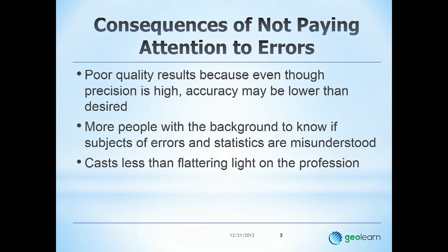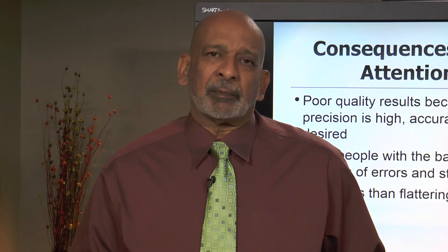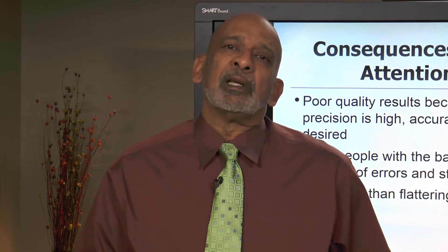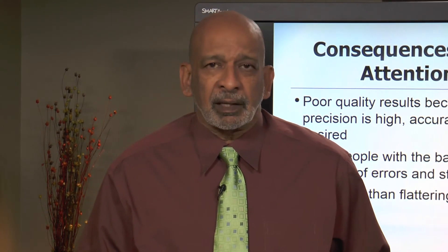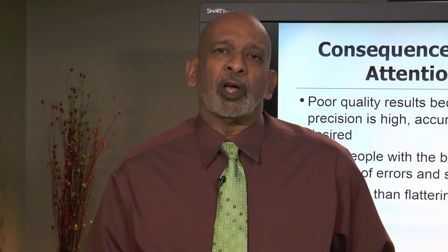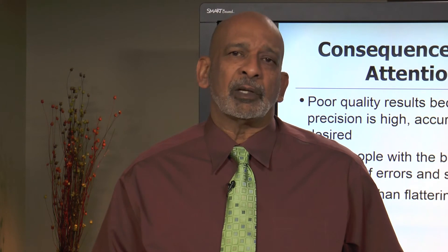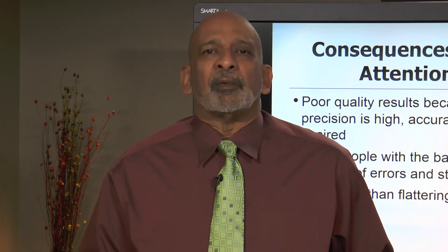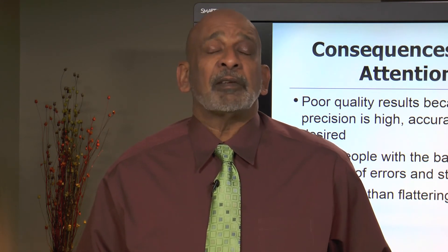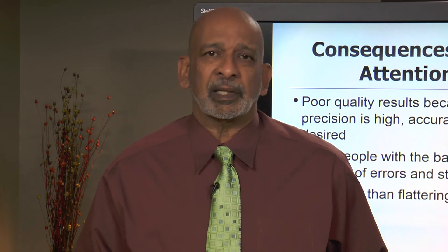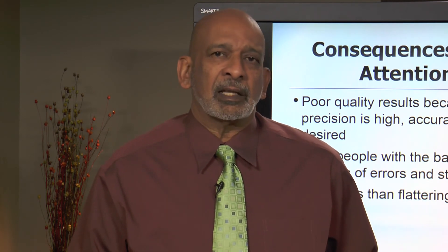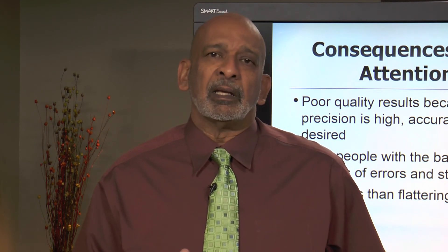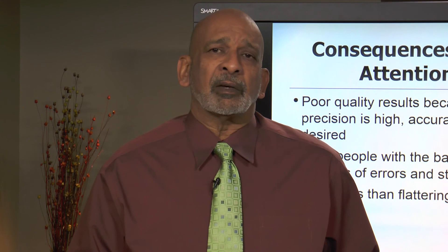Those of you who practice property boundary surveying will probably recall, perhaps with a little enjoyment, that lawyers for example often complain that two surveyors cannot agree on a measurement of the same line — a common line between two adjoining parcels. Unfortunately, surveyors don't do a good job of explaining why these discrepancies occur. It's totally fine for two surveyors to come up with two different measurements, but they need to be within certain limits, and surveyors need to be able to understand and explain why these differences occur and why they are within certain limits.